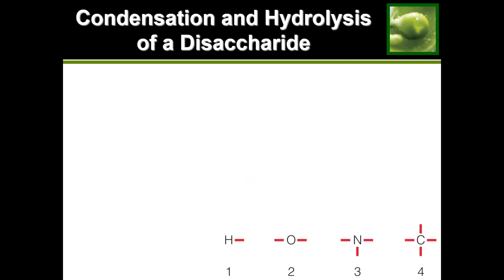Now that we've discussed the different bond requirements, I want to show you how this is beneficial in understanding what monosaccharides need to do to become a disaccharide. For simplicity, we're going to draw a simple structure and pretend that this is a monosaccharide. A monosaccharide is more complex than this, but this simple structure will demonstrate the process. We want to link it together with another monosaccharide to form a disaccharide.